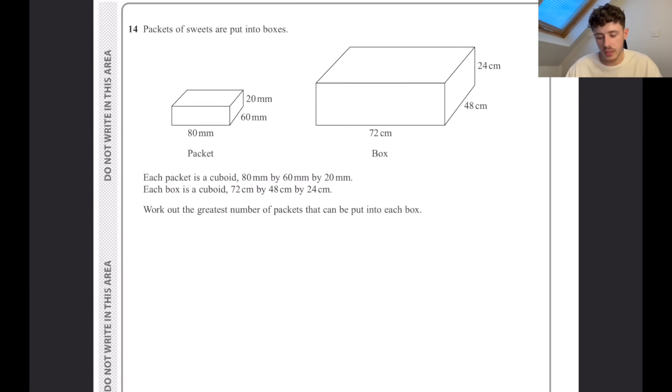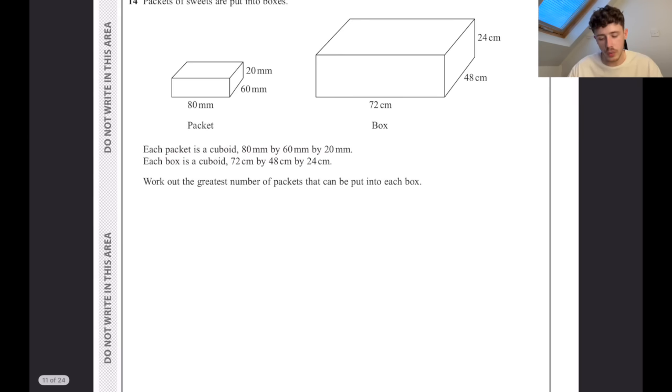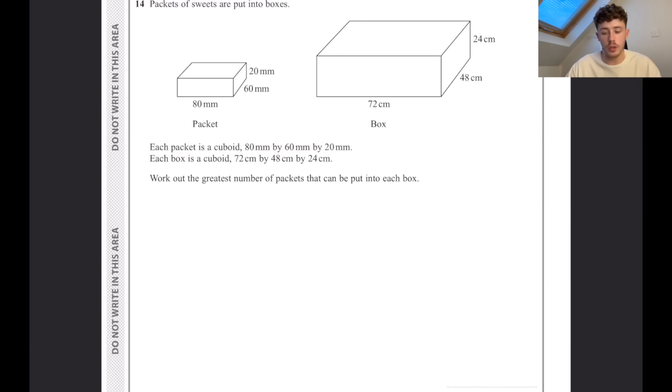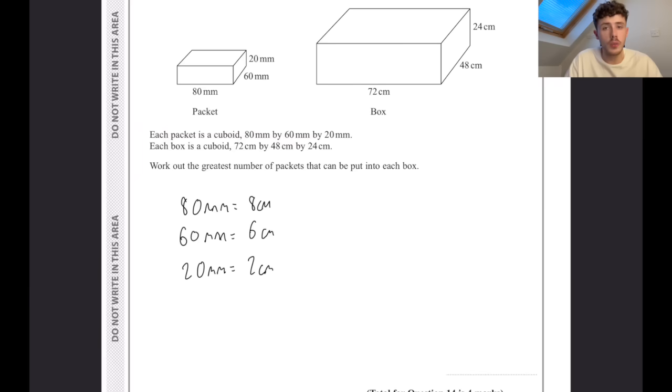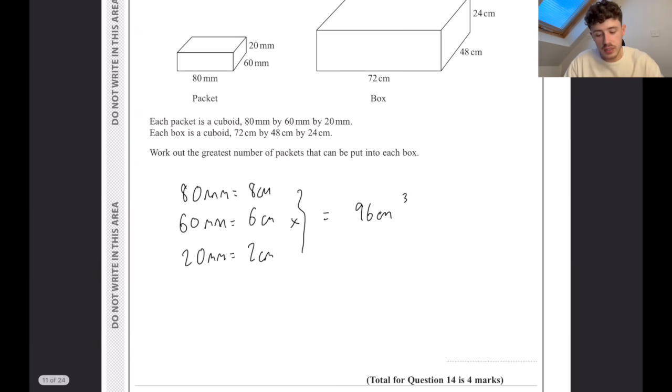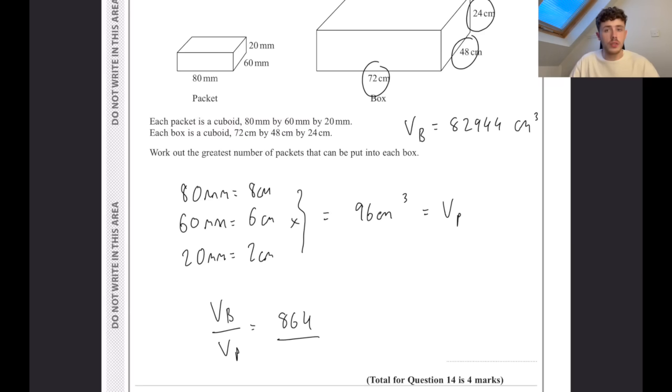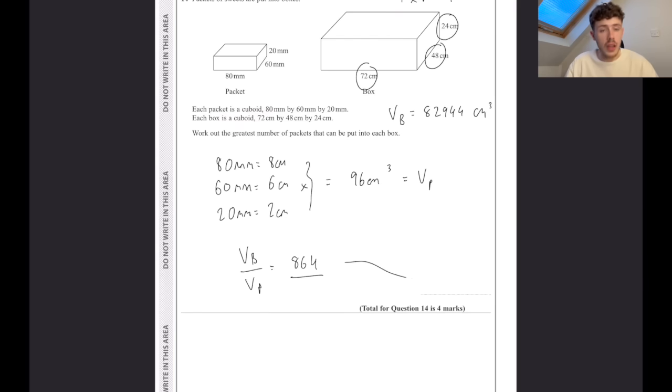Packets of sweets are put into boxes. Each packet is a cuboid with those dimensions. Each box is a cuboid with those dimensions. Work out the greatest number of packets that can be put into each box. The first thing I would do is convert those millimetres into centimetres. Next, we can work out the volume of one of the packets by multiplying these three together, which gives us 96 centimetres cubed - I'm going to call that VP for volume of the packet. Now if we multiply those three numbers together for the box, we get the volume of the box. If we do the volume of the box divided by the volume of the packet, we get an answer of 864.